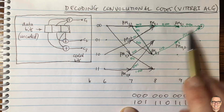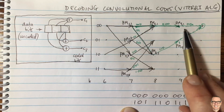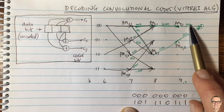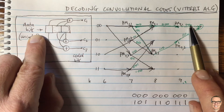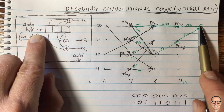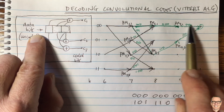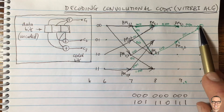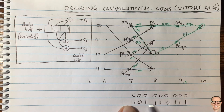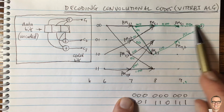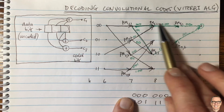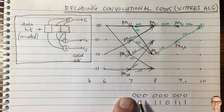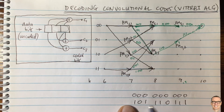This decision is not about taking a single measurement at time slot 10 and deciding whether the data bit was a 1 or 0. You're effectively taking all nine measurements over three time slots and asking: do they match up better with this sequence or that one?